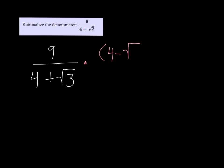So we're going to multiply by 4 minus the square root of 3 over 4 minus the square root of 3. And I can do that because this expression that I'm multiplying by is just 1.